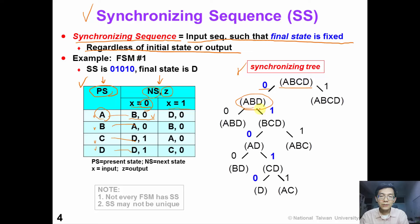Similarly, given input 1, the next states become B, C, and D. Continuing down this branch, the final state would be fixed to D, regardless of the initial state.